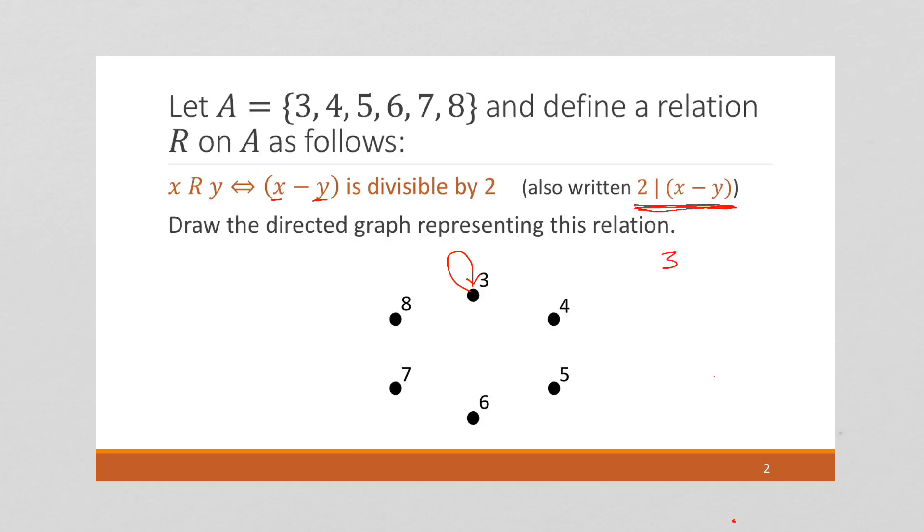And again, the reason is 3 minus 3 is divisible by 2. Now, 3 minus 4, that's going to give me negative 1, that's not divisible by 2, so I have no arrow there.